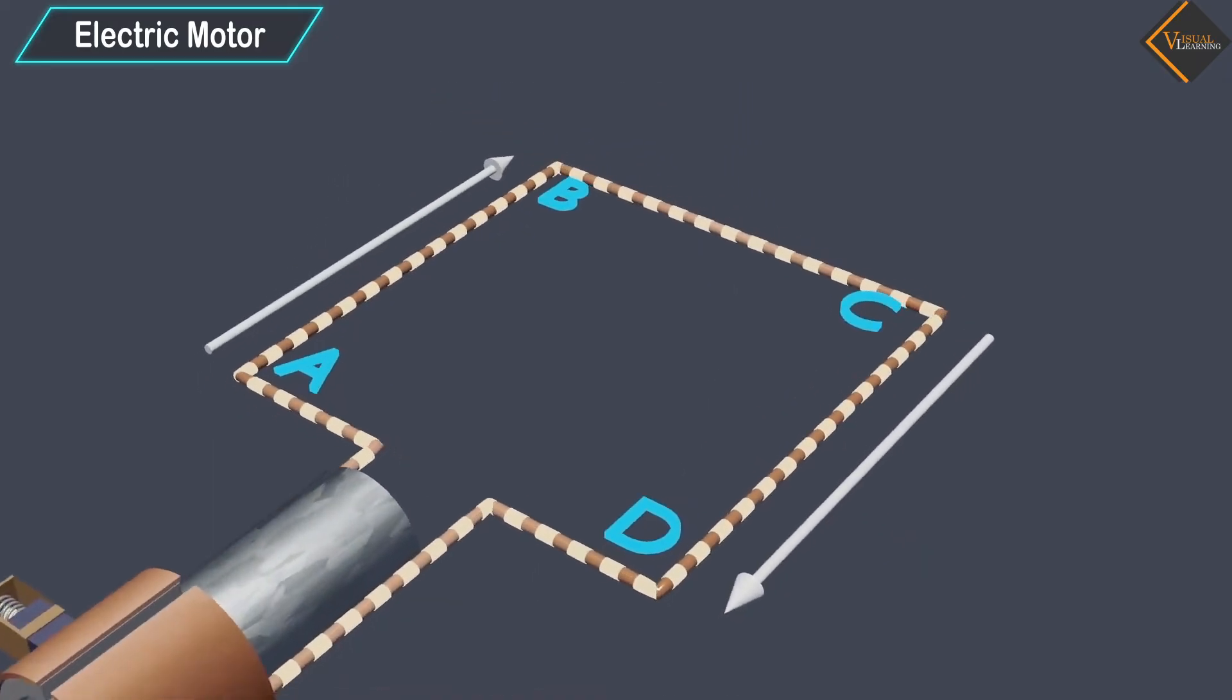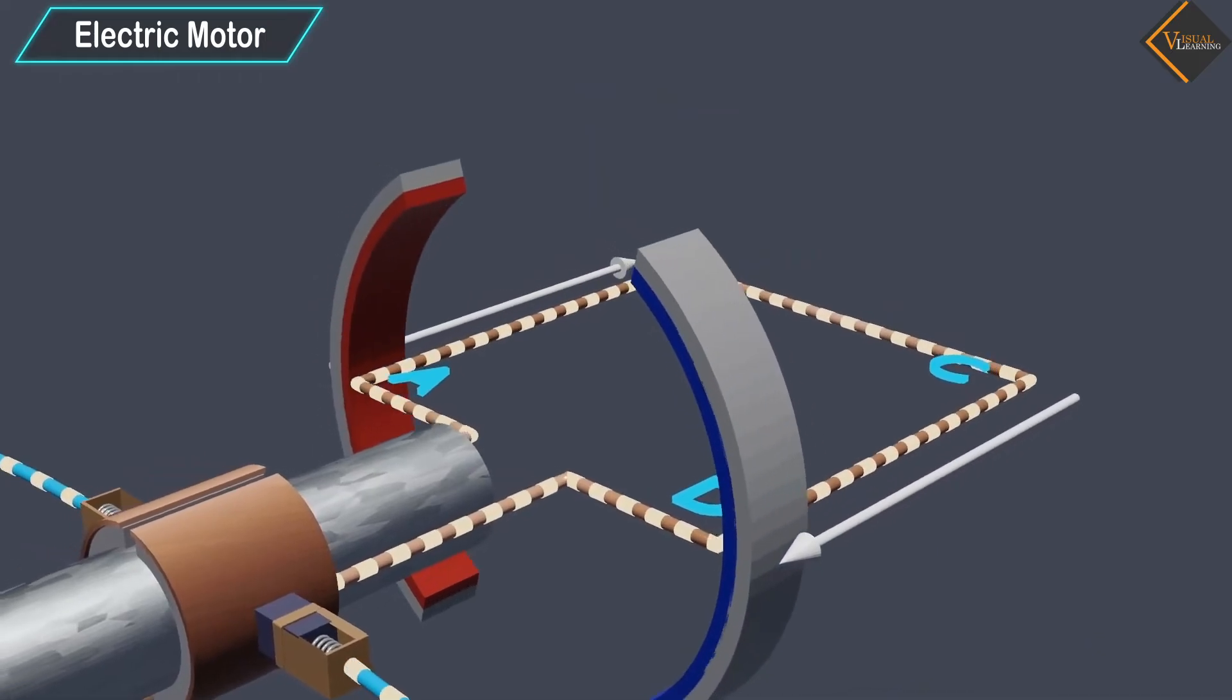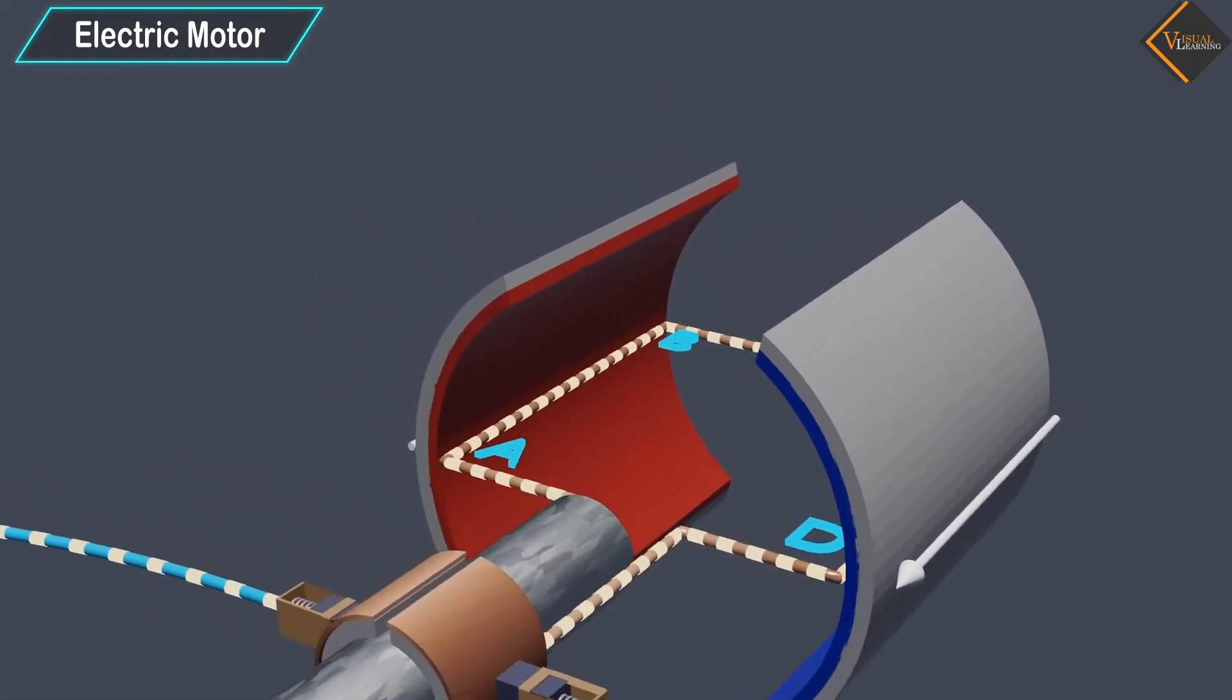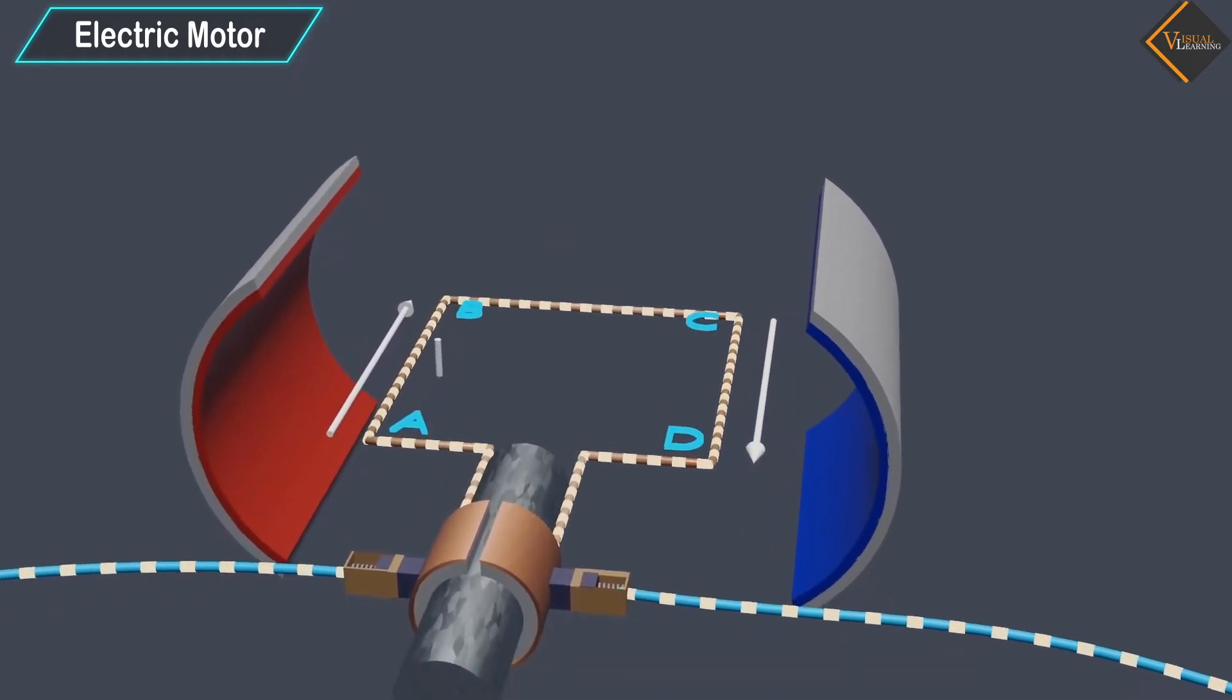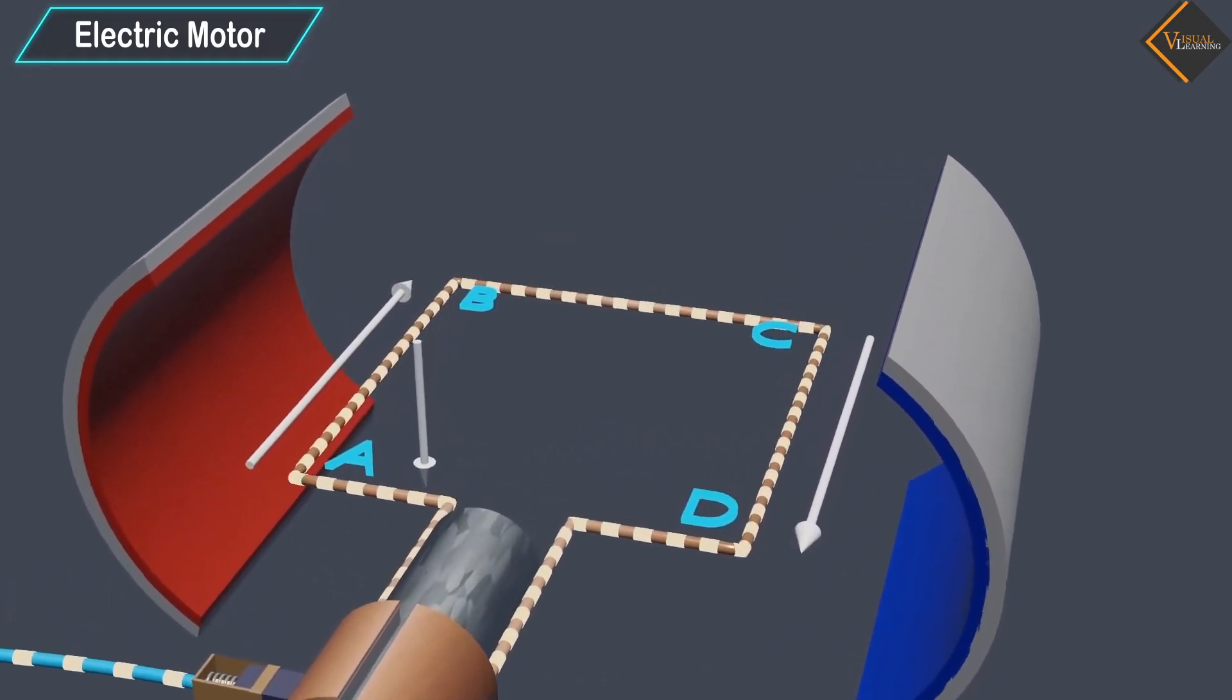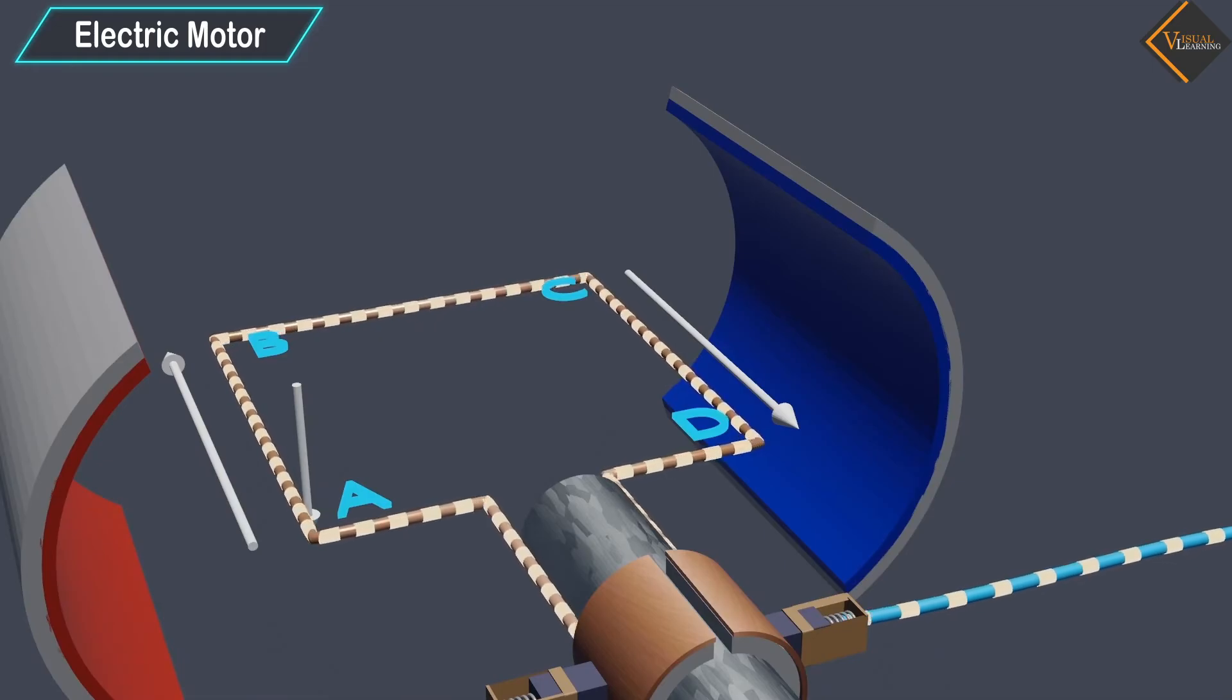On applying Fleming's left-hand rule for the direction of force on a current-carrying conductor in a magnetic field, we find that the force acting on arm A, B pushes it downwards, while the force acting on arm C, D pushes it upwards.